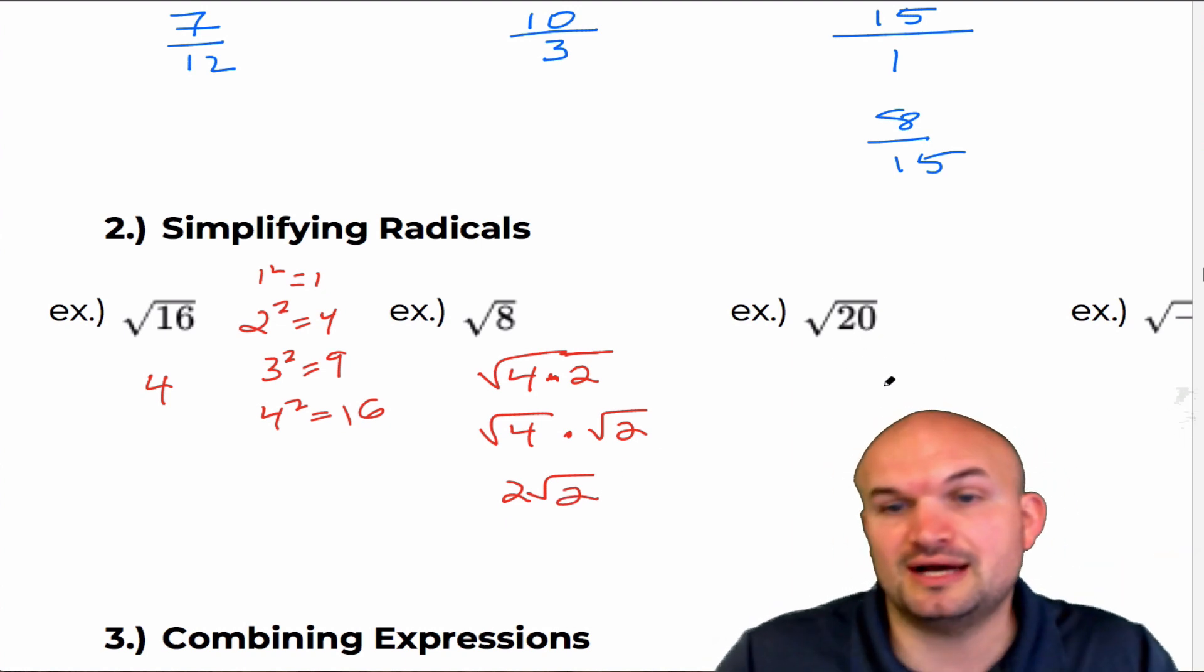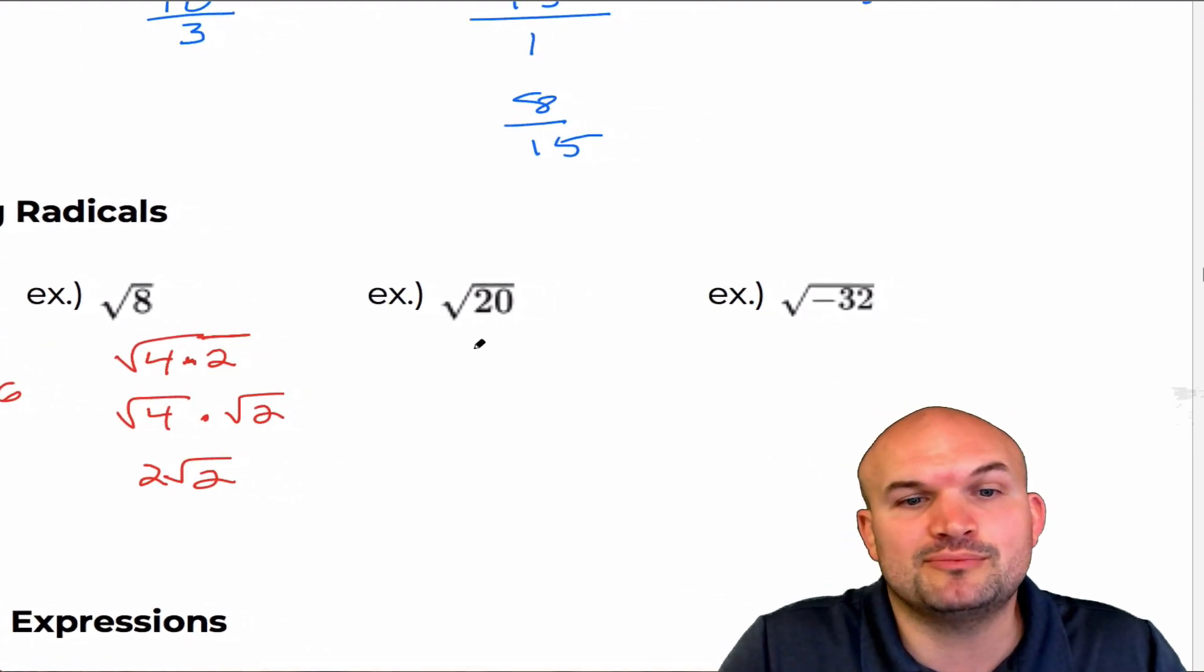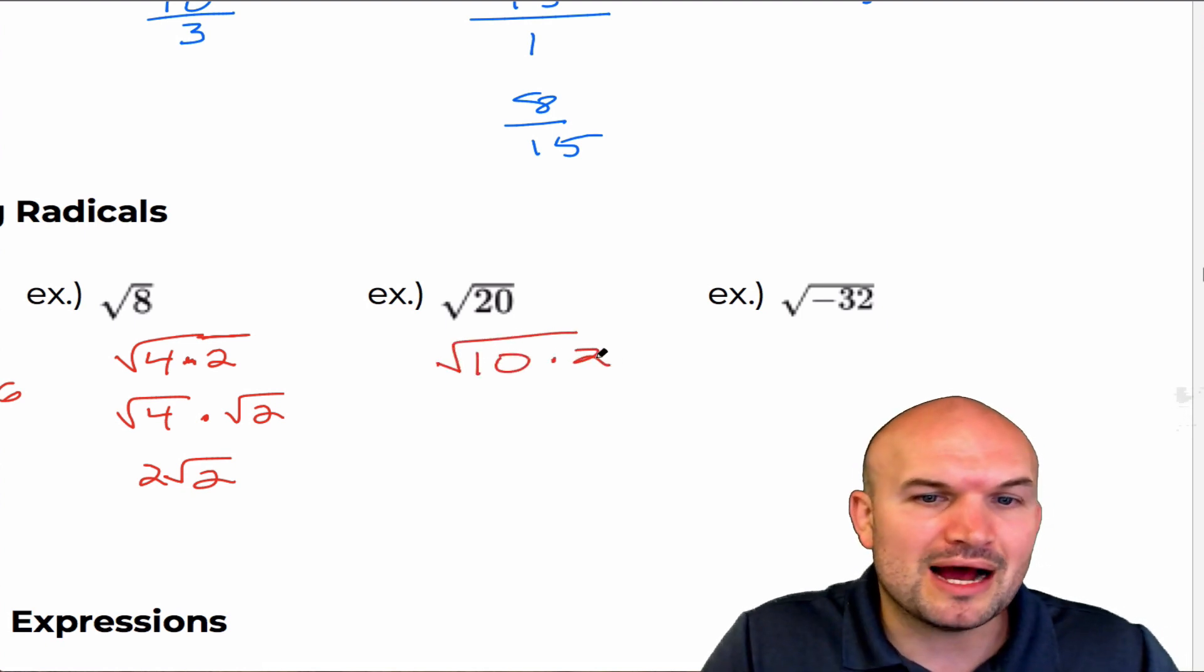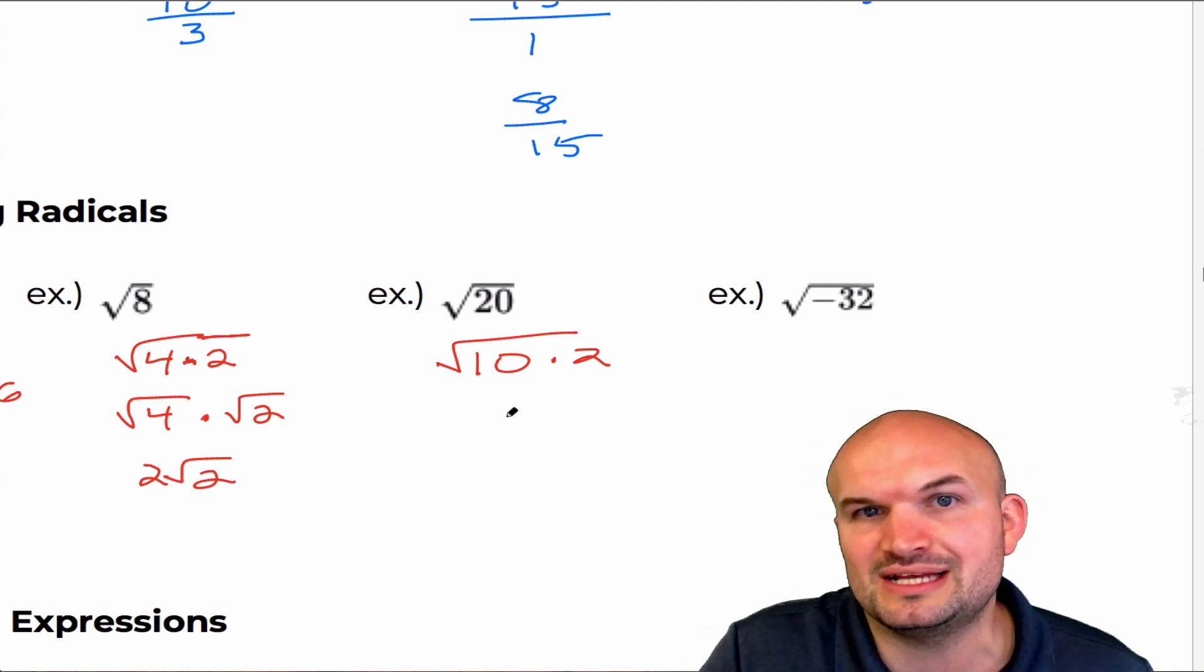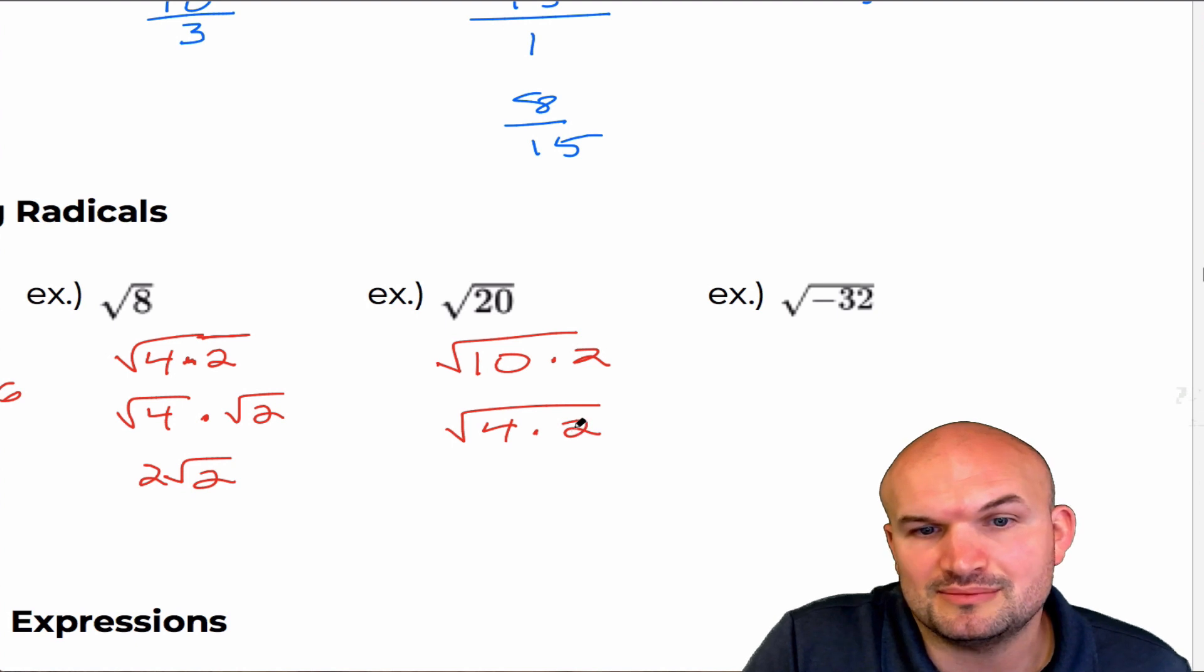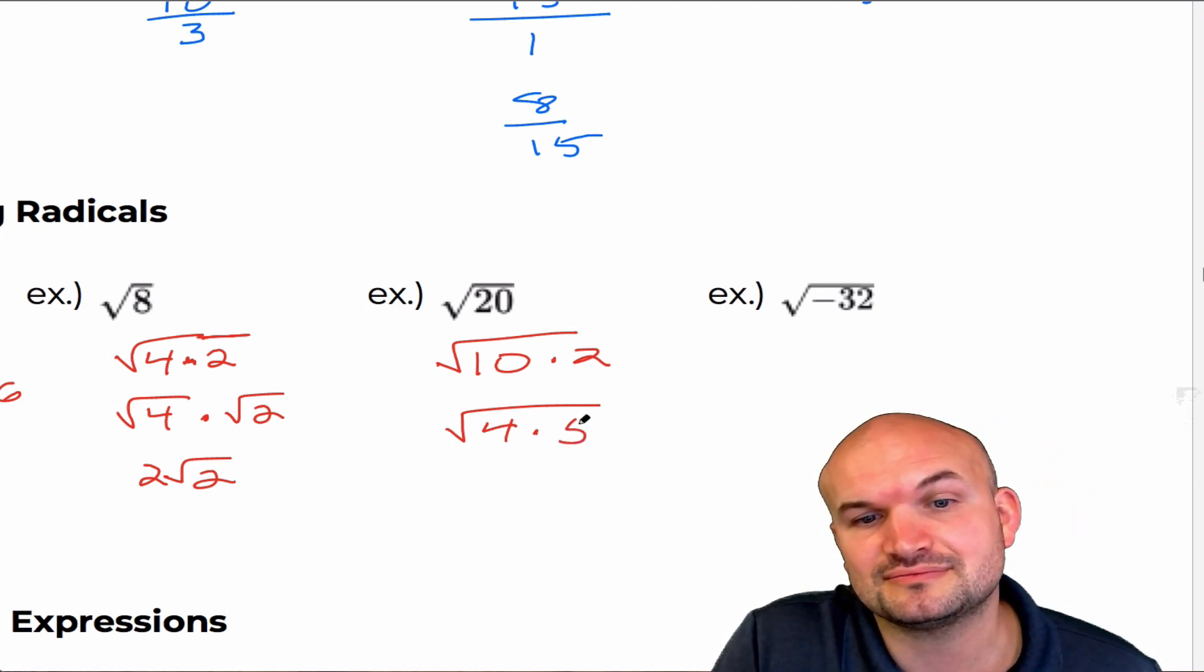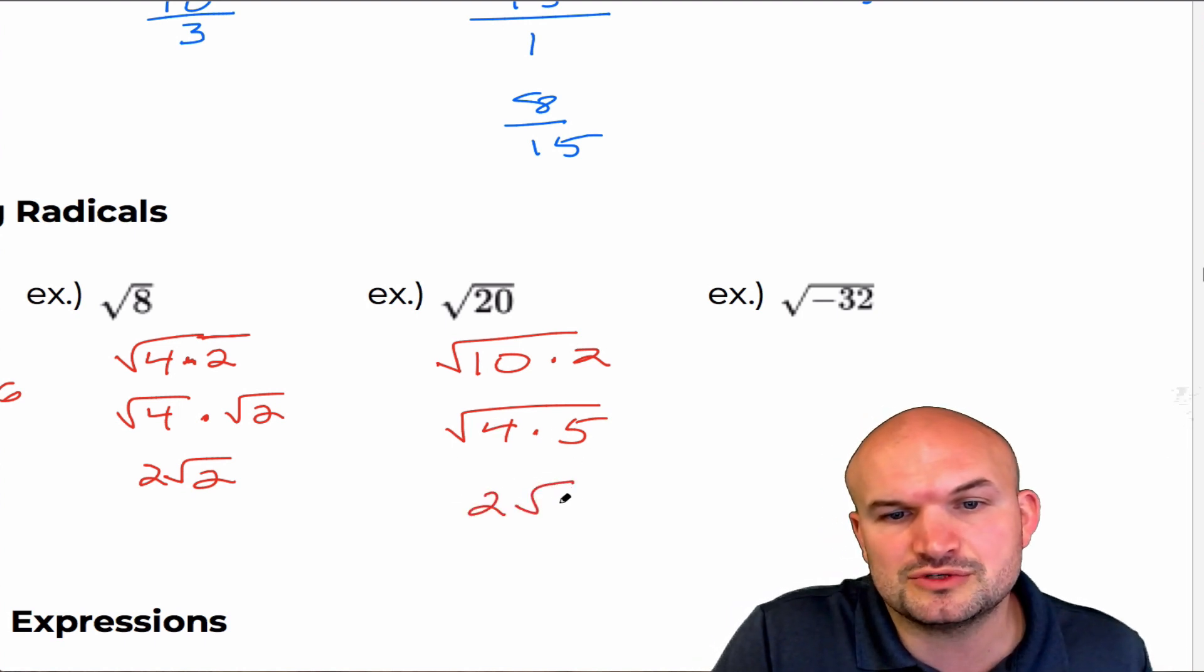And then in this last example here, I have the square root of 20. And again, we're going to kind of do the same thing. Now, the important thing is where students sometimes will get mixed up and say, oh, well, that's going to be 10 times two. Well, the problem is 10 and two are not square numbers. So that's not going to be my best way to be able to simplify this radical. However, I could break this up into square root of four times five. Now breaking up this way, you could see we're going to follow the same process. So that's going to be two square root of five.